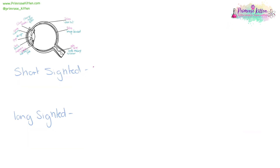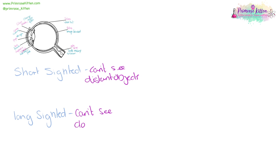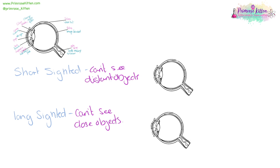If you are short-sighted, you can't see distant objects, and if you are long-sighted, you can't see close objects. In an eye that can see correctly, the lens will take the light and focus the image on the retina. Someone that is short-sighted has the image focused before the retina, and someone that is long-sighted has the image focused behind the retina. To correct short-sightedness, we need a diverging lens.